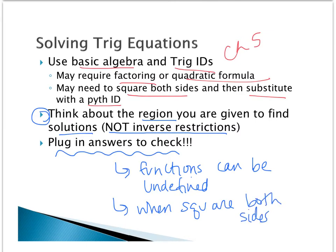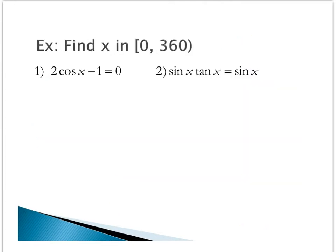Let's go ahead and take a look at how these strategies will play out. In this first problem, this is similar to solving a basic linear equation. If I have 2 cosine x minus 1 equals 0, I'm going to add 1 to each side, giving me 2 cosine of x equals 1, and then divide by 2.